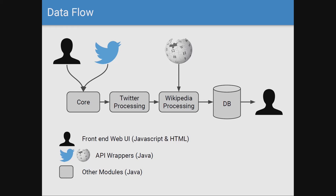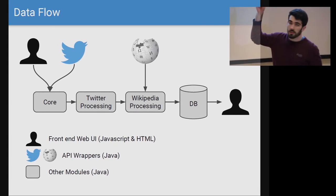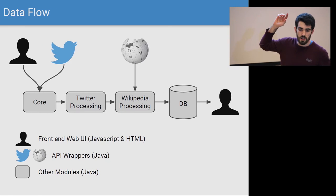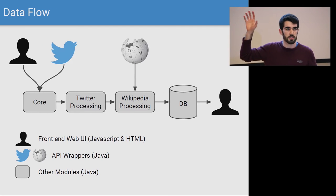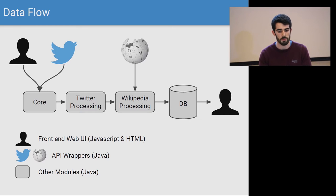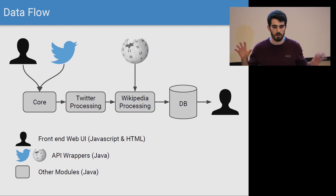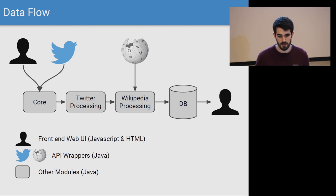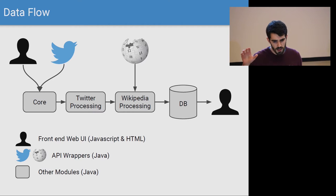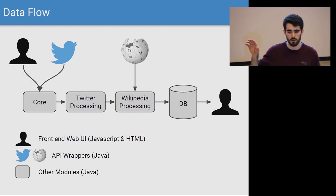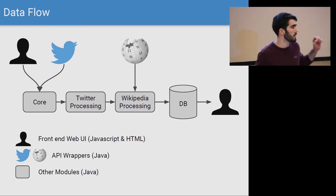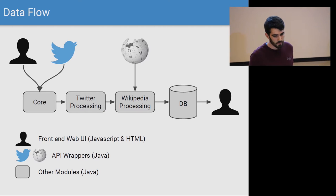So the data flow looks like this. Up on the top left, the trends are sourced from either user input or from the trending list on Twitter. It makes its way through our processing pipeline where we do some stuff to it, which I'll explain in a bit more detail in a few minutes.